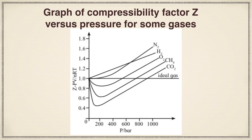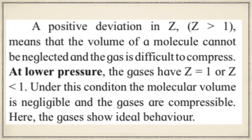What is very important is when Z equals 1, the gas behaves ideally. Other than that, it behaves as a real gas. Z is the ratio of the actual molar volume of a gas to its molar volume if it behaved ideally at that temperature and pressure. We derived this in the last class — the equation is Z equals V_real upon V_ideal. This equation you should remember.